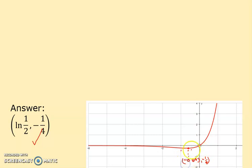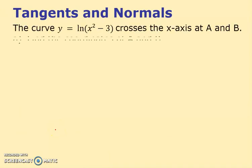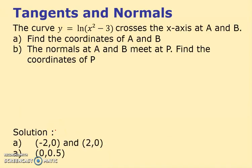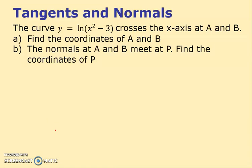Now tangents and normals — a third type of question. We've got y = log(x² - 3). I need to find coordinates, so set y = 0: log(x² - 3) = 0. Moving the log over, x² - 3 = e^0 = 1, so x² = 4, giving x = ±2.